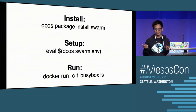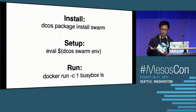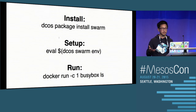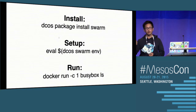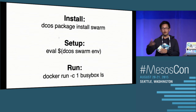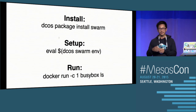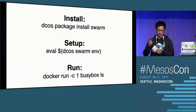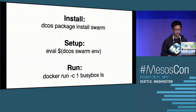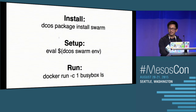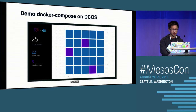Running Swarm on your Mesos cluster with DCOS is really simple. You just run DCOS package install Swarm. You set up your clients by calling DCOS Swarm client setup, which sets environmental variables to automatically point to where the Docker Swarm daemon is launched — so you don't need to figure out which host or slave is running Swarm. It automatically sets the DOCKER_HOST environment variable to the right address. Then just run Docker run with your image and command, and it's running in your cluster.